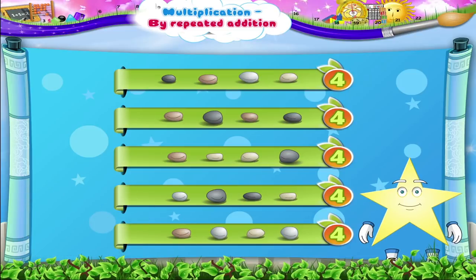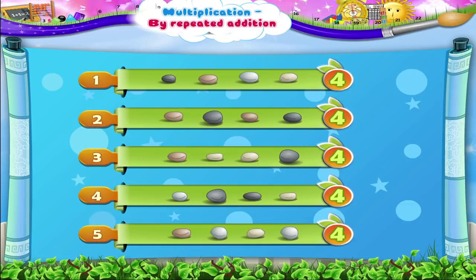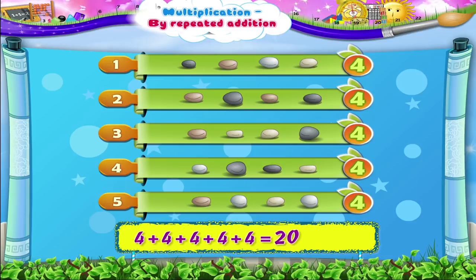No need of counting the pebbles here. Let me show you an easier method. See, there are four pebbles in each line and there are five lines. So we take four five times and add them together. Four plus four plus four plus four plus four is equal to twenty. So we have arranged twenty pebbles here.